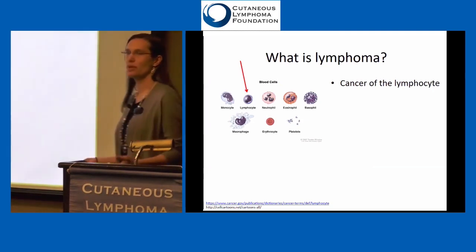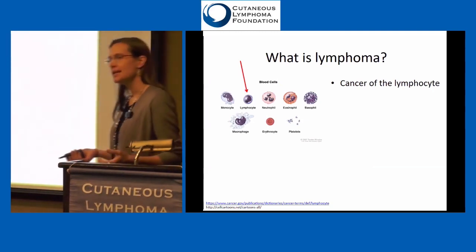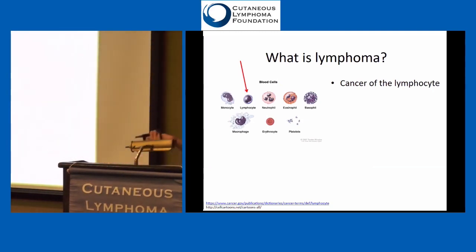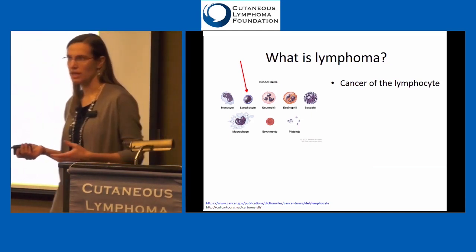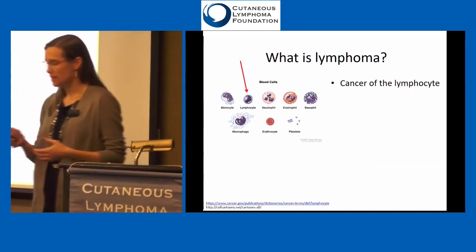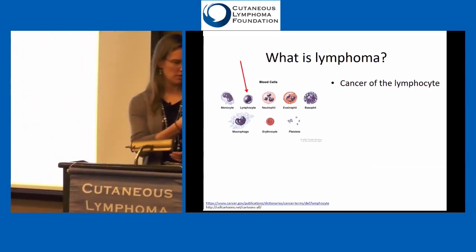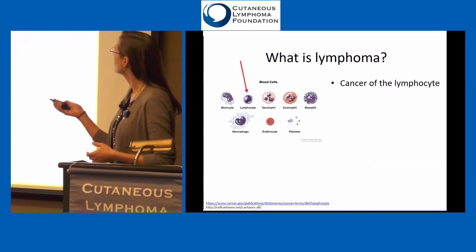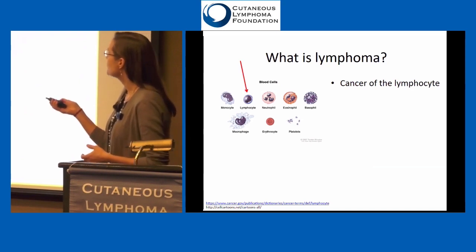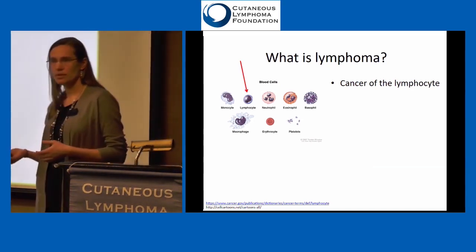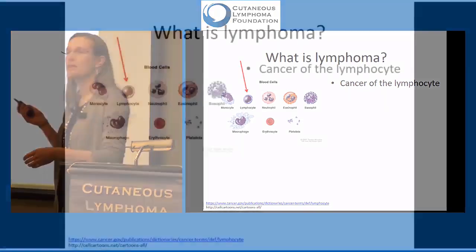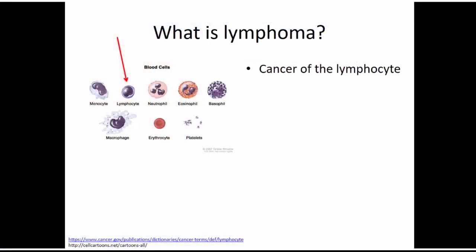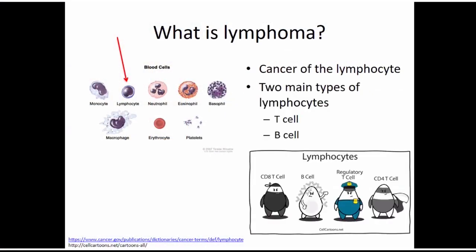So first, what is lymphoma? Lymphoma is the cancer of the lymphocyte. The lymphocyte is just one example of the immune cells or blood cells that we have. The lymphocyte, the small blue cell here, is one example of the white blood cells. When that lymphocyte is growing too quickly, that can turn into lymphoma.